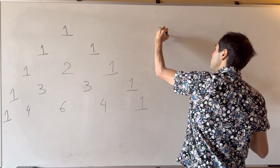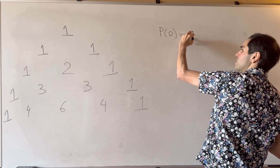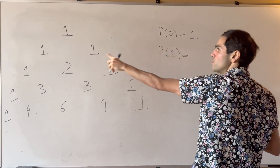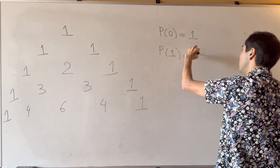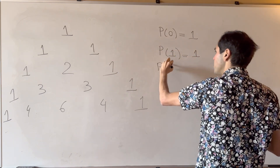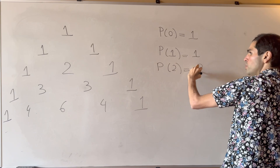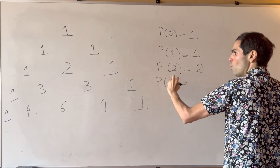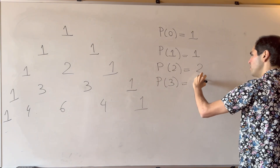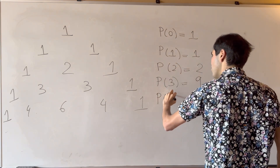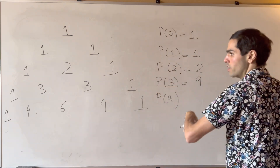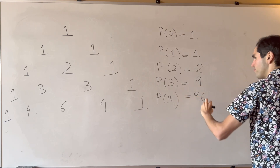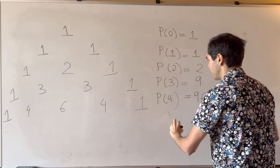So P(0) is 1, P(1) — product is 1×1 which is 1, P(2) would be 2, P(3) — so 1×3×3×1 is 9, and P(4) — 1×4×6×4×1 is 96, et cetera.